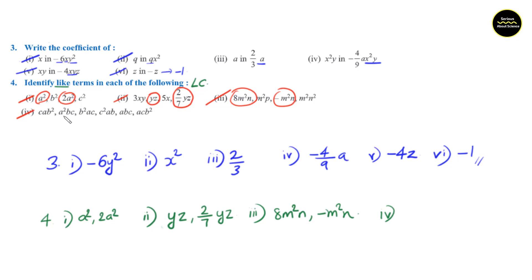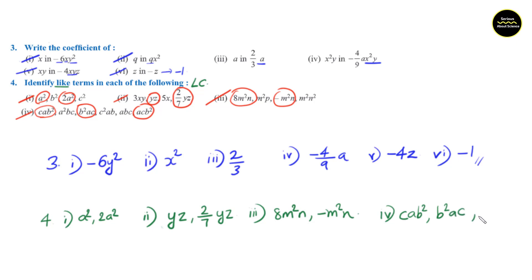Question number 4: cab square, a square b, cb square, ac. In the first term there is b square and the third term also has the same — it is b square ac. The order is different but these are like terms. Also the sixth term acb square has b square and ac. So three of these terms form like terms: cab square, cb square ac, and acb square.